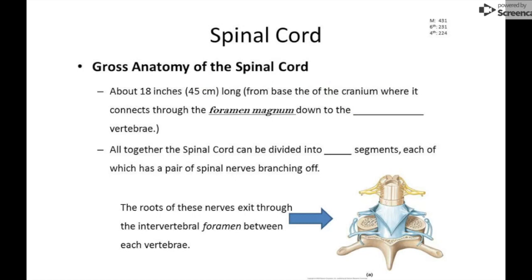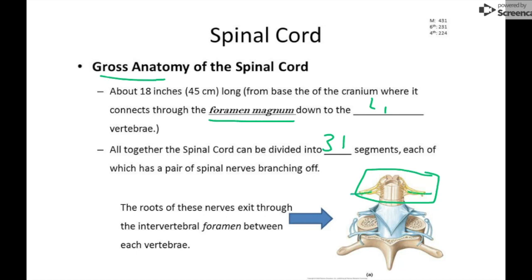Let's dive into the anatomy of the spinal cord — gross anatomy. It runs about 18 inches from the base of the cranium, going through the foramen magnum — that's the large hole through the occipital bone — down to about the L1 vertebra, right about the level of your belly button. The spinal cord can be divided into 31 segments, each of which has a pair of spinal nerves branching out.